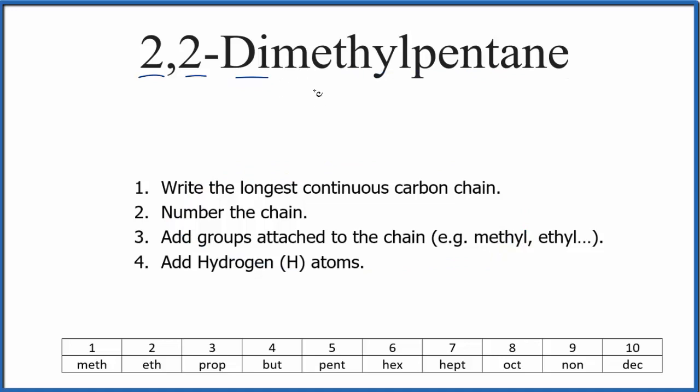So first, as we look at 2,2-dimethylpentane, we can see that it has pentane at the end. So we're going to write the longest continuous carbon chain for this molecule. Pent, when we look up pent, that tells us that we'll have five carbons in a chain.